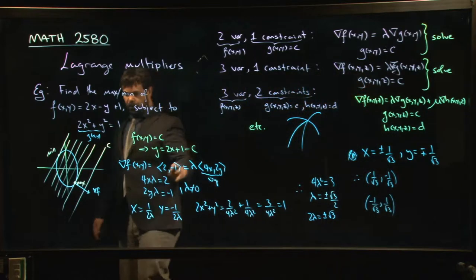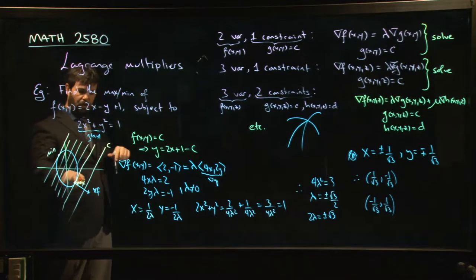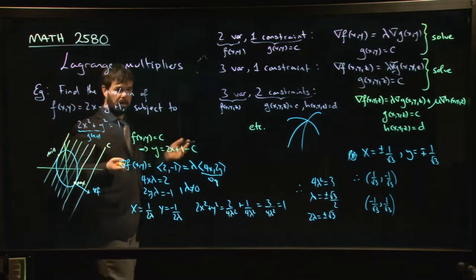Now we know from the picture that the first of those two points must be the maximum because it's down here in quadrant 3. The second of those two points must be the minimum up here in quadrant 4. The min must be this one up here in quadrant 2.